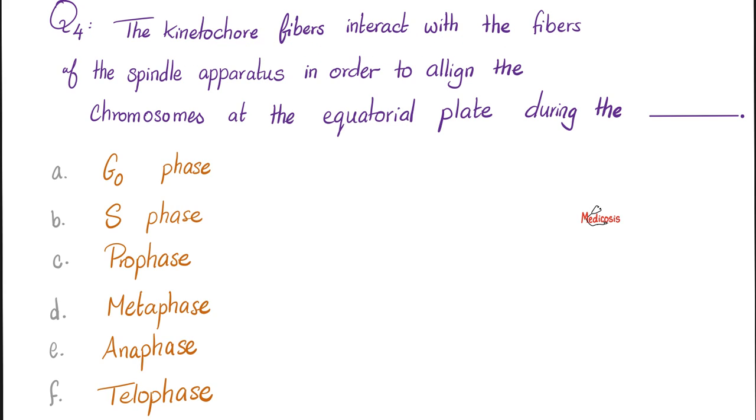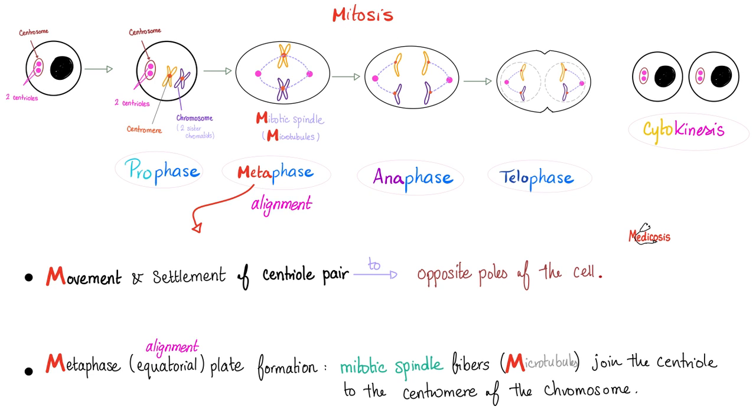Question four. The kinetochore fibers interact with the fibers of the spindle apparatus in order to align the chromosomes at the equatorial plate during, and the answer is, metaphase. Remember when I told you before, meta with an M. Remember, mirror with an M. Here's mitosis. Here is metaphase. Look at this alignment in the midline. Everything here is an M. It's a mirror image. We are in that midline.